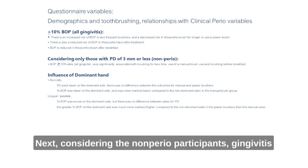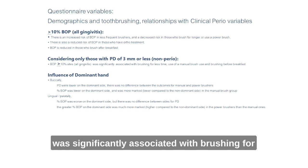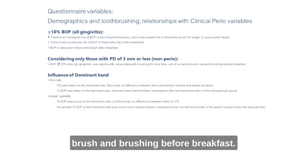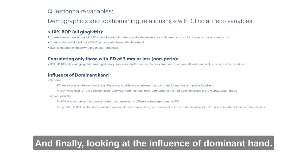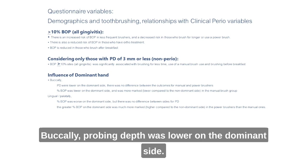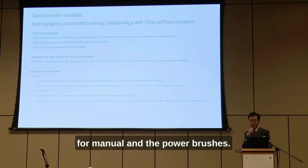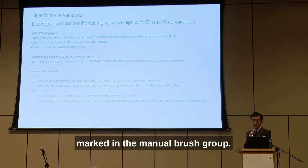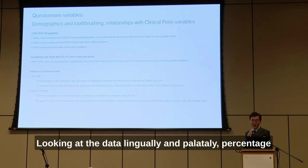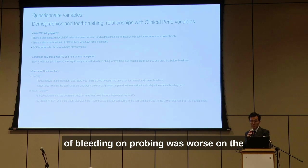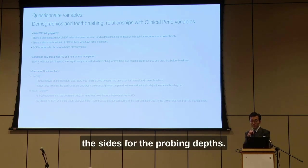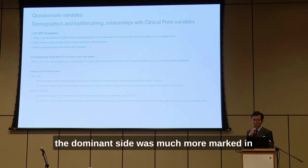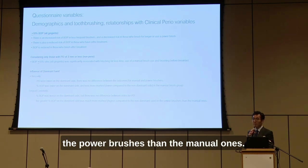For non-perio participants, gingivitis was significantly associated with brushing for less time, use of a manual brush, and brushing before breakfast. Looking at the influence of dominant hand: buccal probing depth was lower on the dominant side, with no difference between manual and power brushes. Percentage of bleeding on probing was lower on the dominant side and more marked in the manual brush group. Lingually and palatally, percentage of bleeding on probing was worse on the dominant side but there was no difference between sides for probing depths. The greater percentage of bleeding on probing on the dominant side was much more marked in power brush users than manual ones.